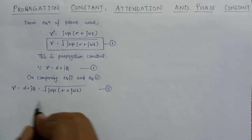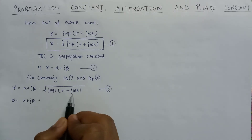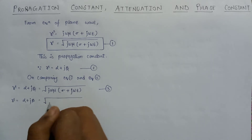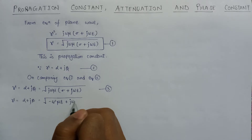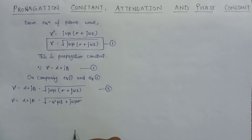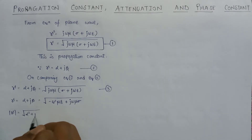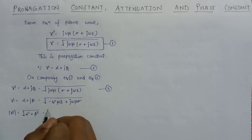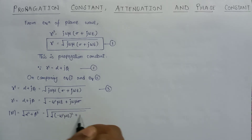This can also be represented as gamma equals alpha plus j beta. On multiplying it out, we get minus omega squared mu epsilon plus j omega mu sigma. On calculating the magnitude, we get the modulus of gamma, which is also equal to the square root of alpha squared plus beta squared.